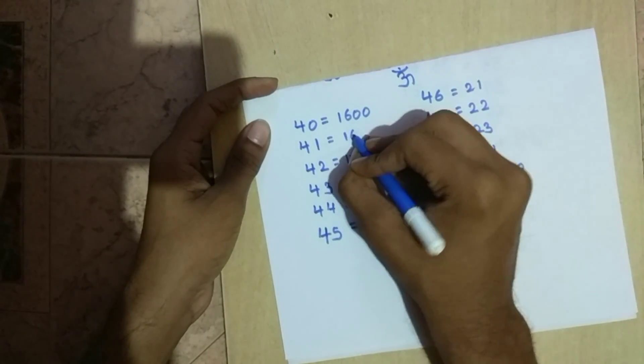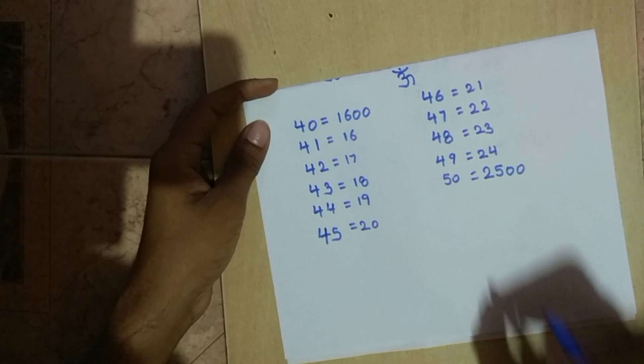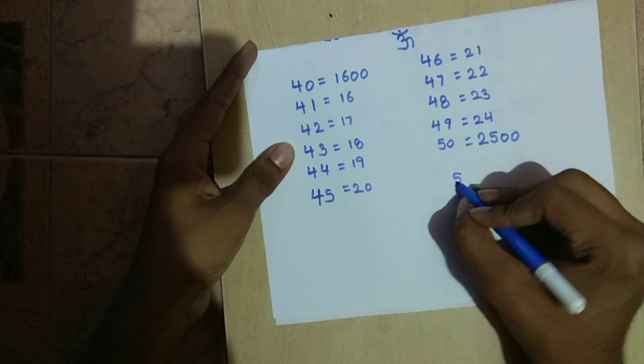Of 48 will be 23 and so on. The first two digits of 42 will be 17 and of 41 will be 16. Now I think you understood why we went in descending order.